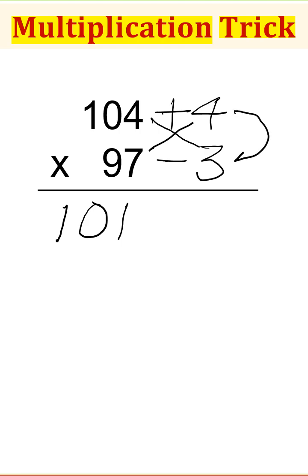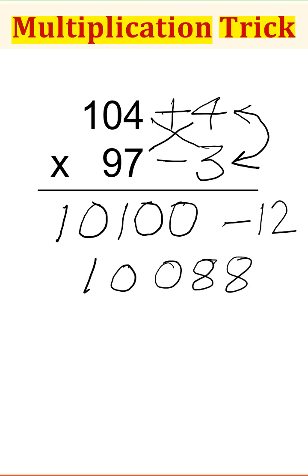Now we have one positive and one negative number, so we will write the product here, minus 12, but we have to put here double 0. Now 10100 minus 12 would be 10088, and this is our answer.